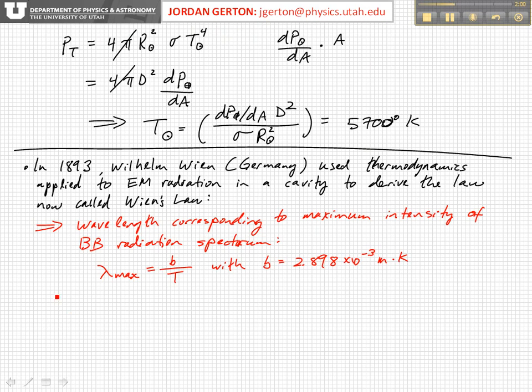Now later on in 1893, Wilhelm Wien from Germany basically modeled black body radiation with the radiation that would exist in a cavity, electromagnetic radiation that would exist in a cavity, and basically thinking of radiation as waves, only certain waves will fit into the cavity, and we'll get into this a little bit more in a little bit.